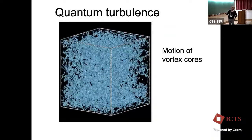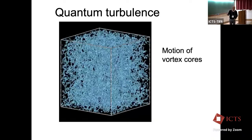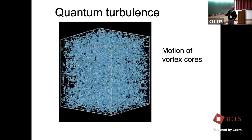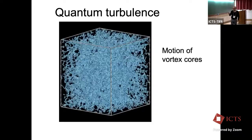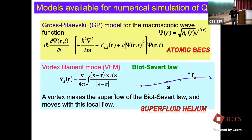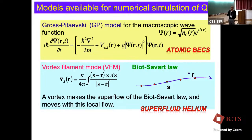This is typical quantum turbulence — a numerical simulation of the Gross-Pitaevskii model where the blue lines show the motion of vortex cores. We have two models available for numerical studies of quantum turbulence. One is the famous Gross-Pitaevskii model, which is a nonlinear Schrödinger equation, used for atomic BECs. The other is the vortex filament model based on the Biot-Savart law, used for superfluid helium.